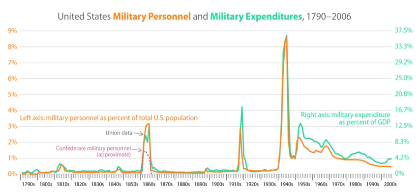The other Barbary States continued to raid U.S. shipping, until the Second Barbary War in 1815 ended the practice.